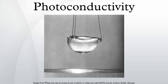Photoconductivity is an optical and electrical phenomenon in which a material becomes more electrically conductive due to the absorption of electromagnetic radiation such as visible light, ultraviolet light, infrared light, or gamma radiation.